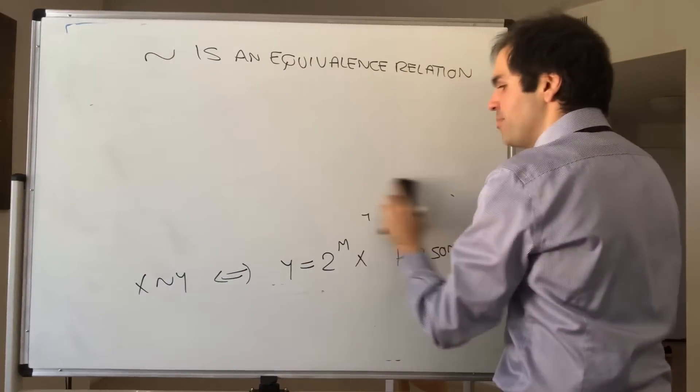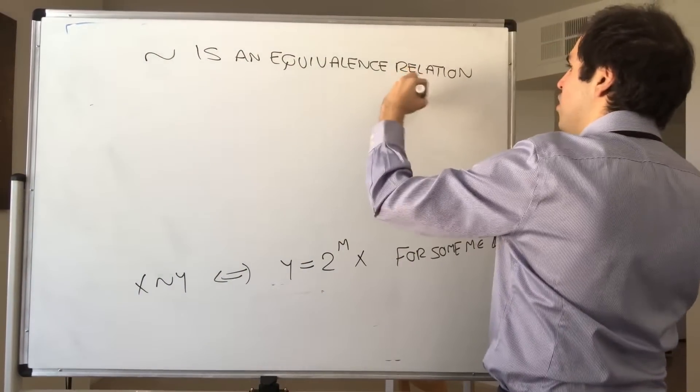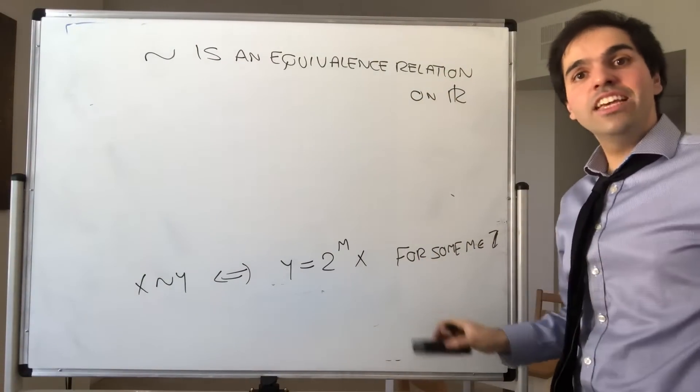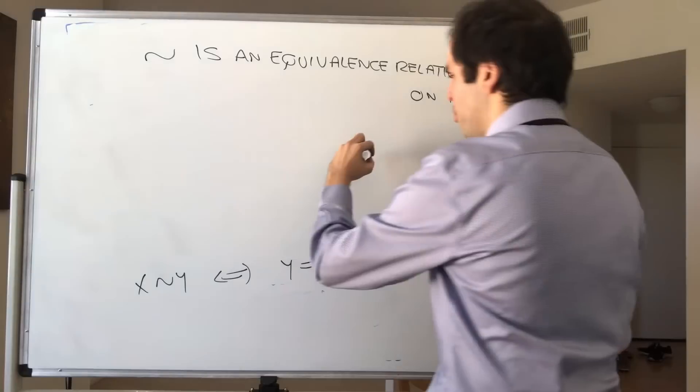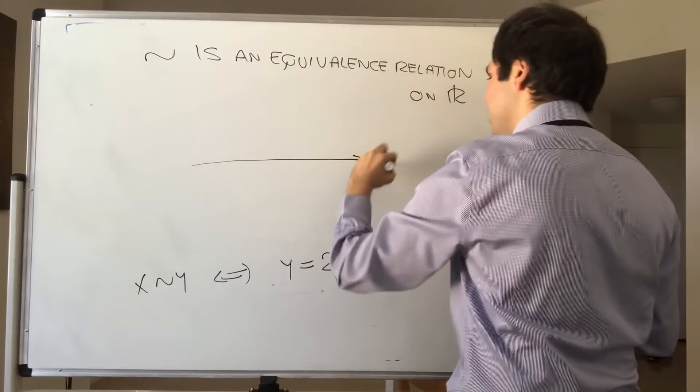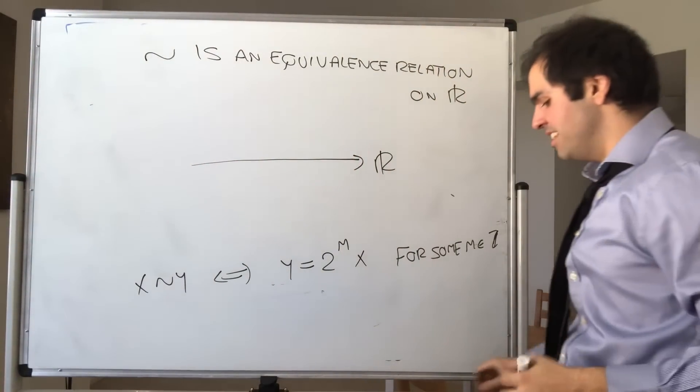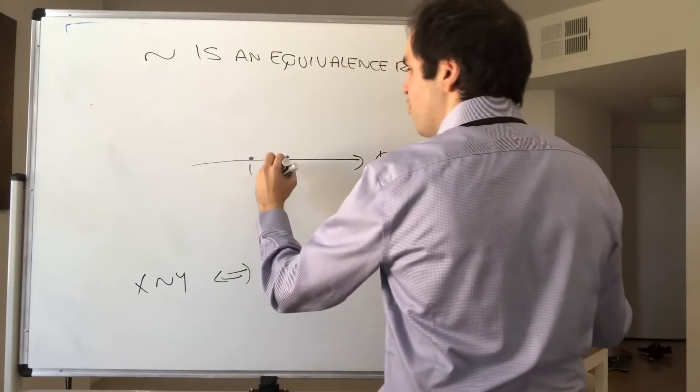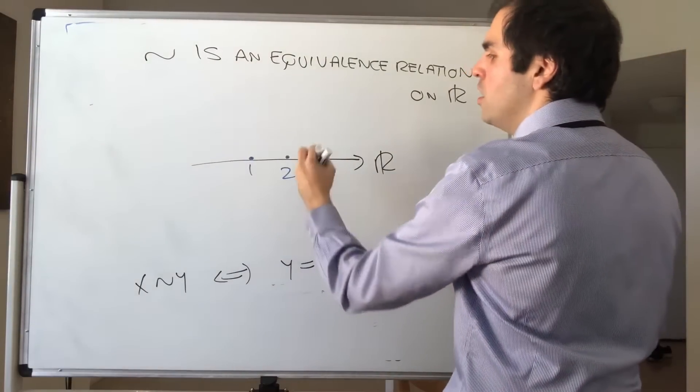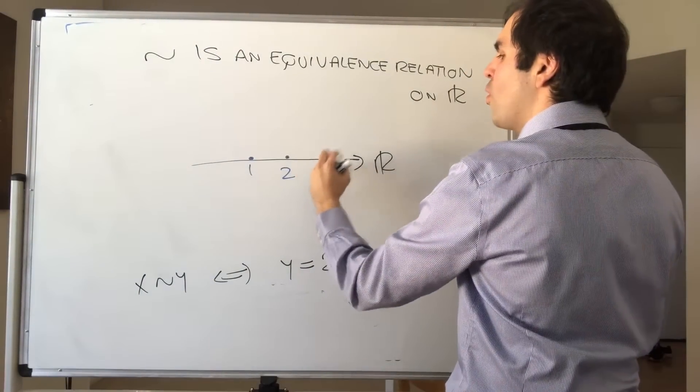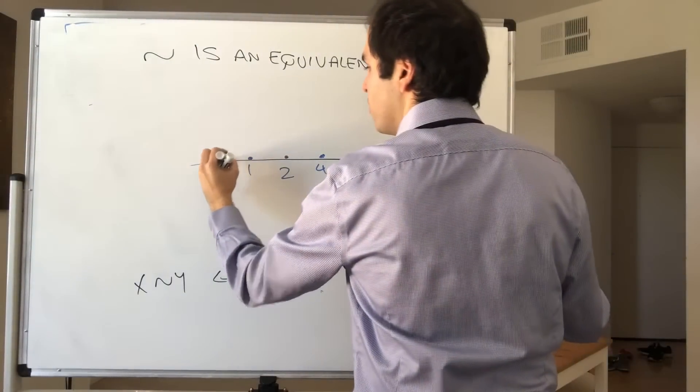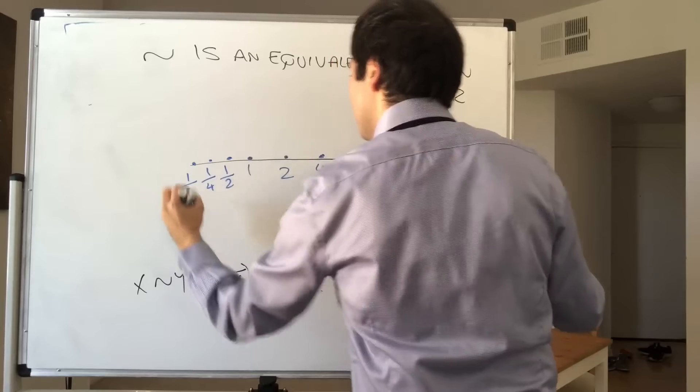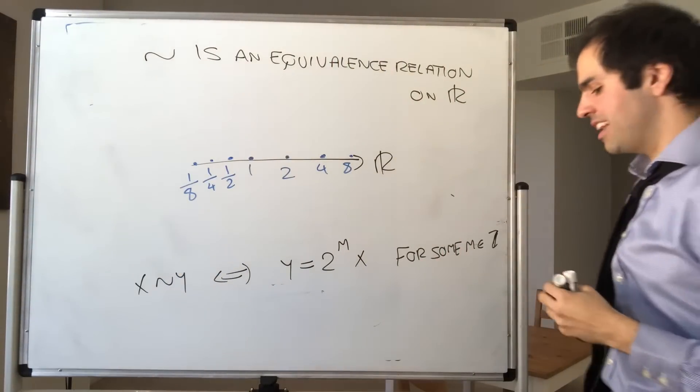And what's amazing about this, so on R, what's amazing about equivalence relations is that they give us a way of subdividing the real numbers, or any set, really. So you now have a bunch of classes of equivalence, of numbers that are equivalent to each other. So, for instance, 1, 2, 4, 8, and then also 1 half, 1 quarter, 1 eighth, they're all in the same equivalence class.